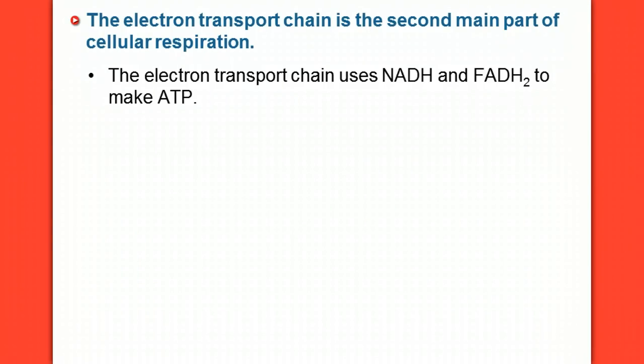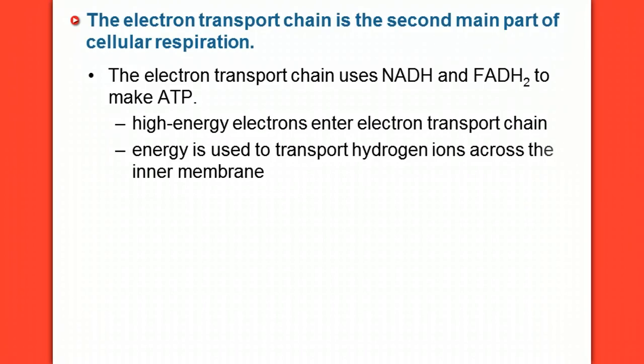So the electron transport chain, which is the final stage of cellular respiration, uses those energy-carrying molecules of NADH and FADH2 to make ATP. We've got high-energy electrons that enter that electron transport chain.